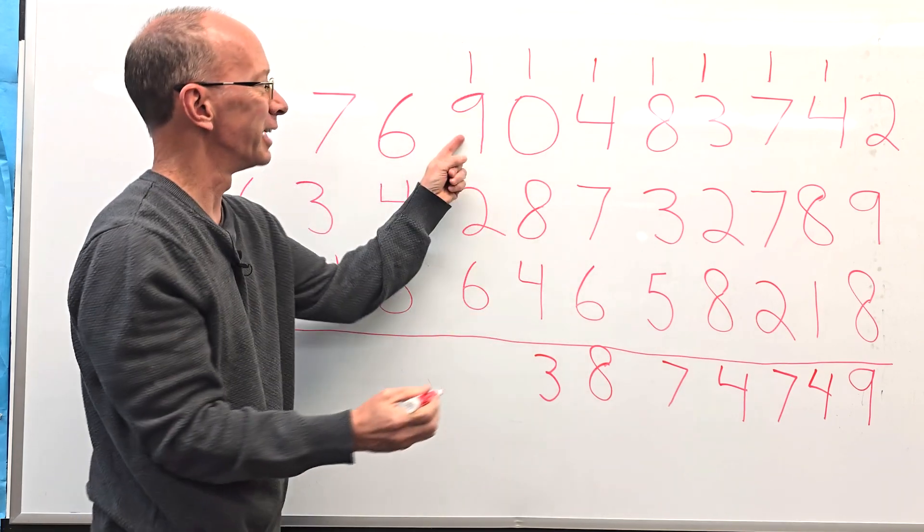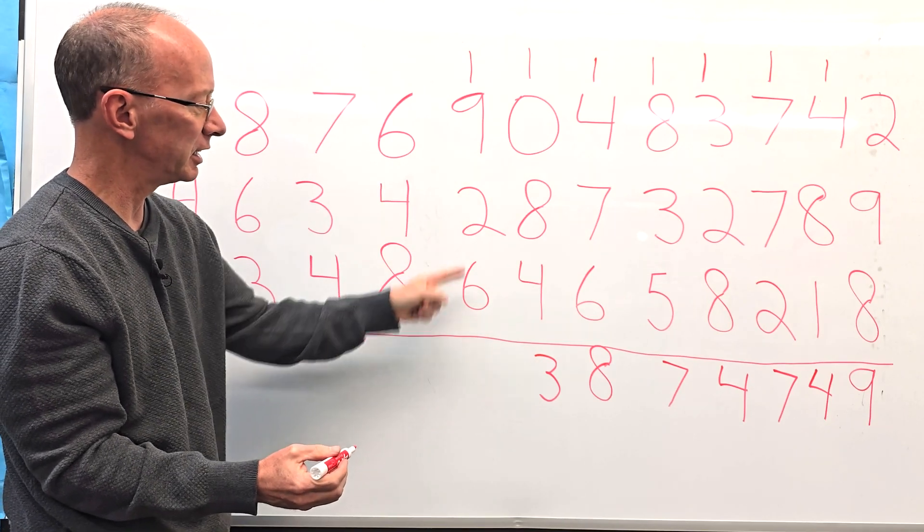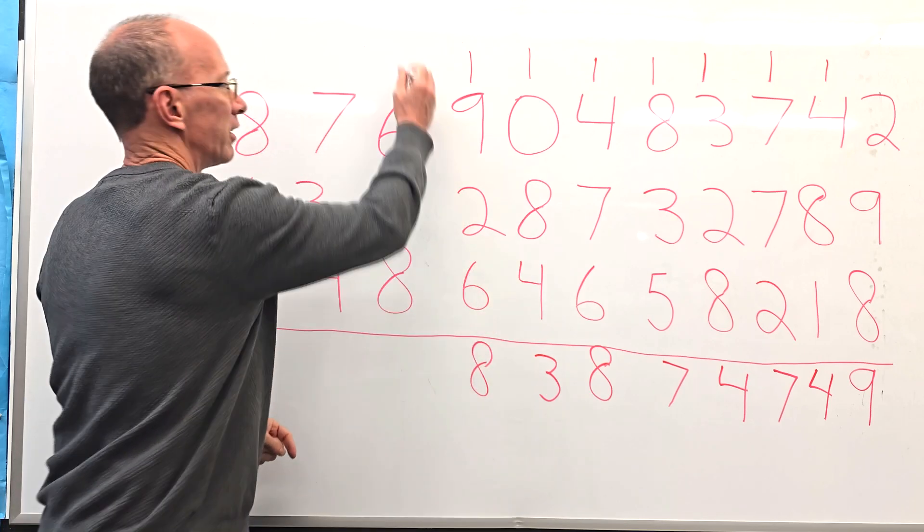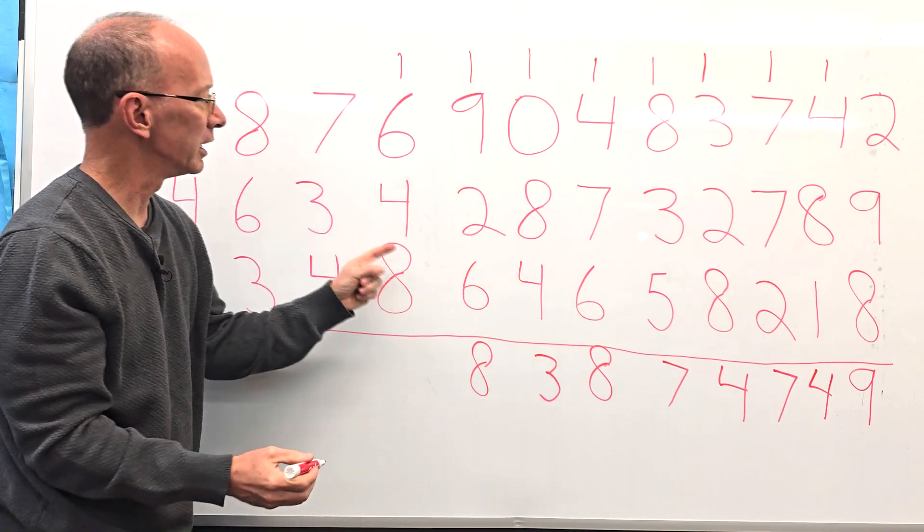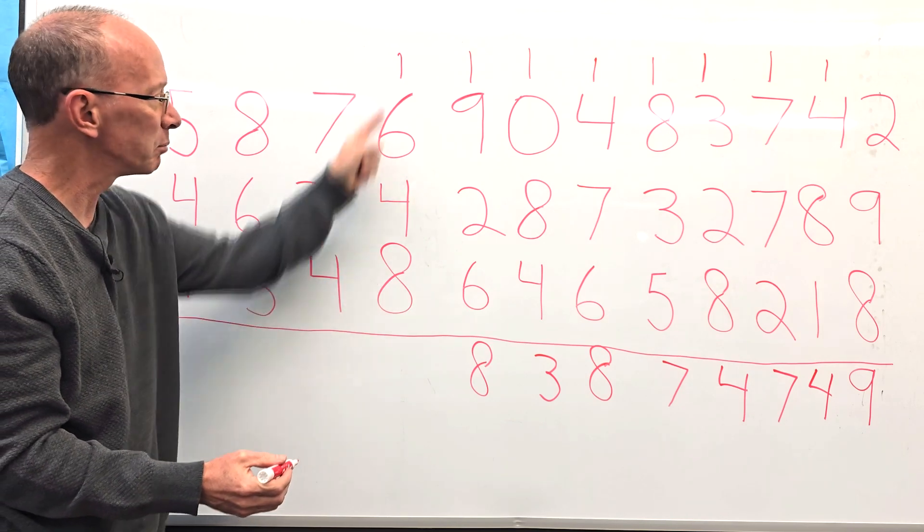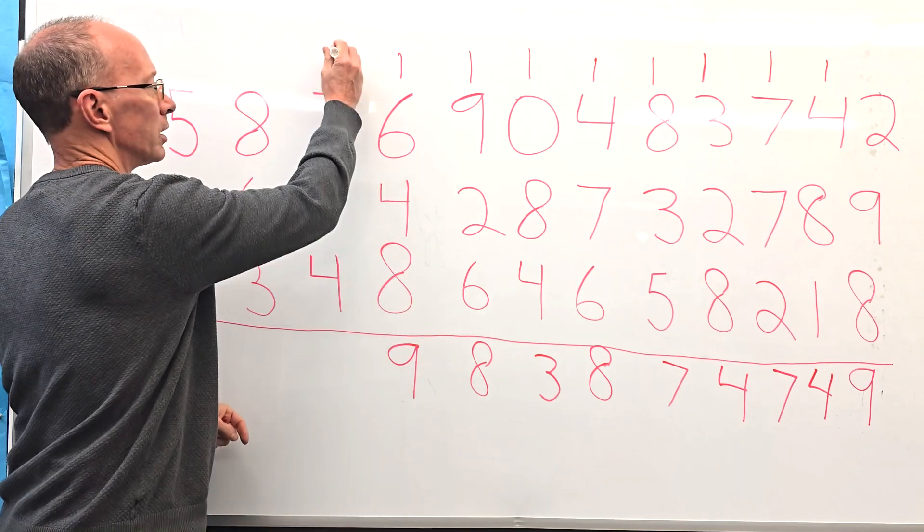And then 9 plus 1 is 10, 10 and 6 is 16, 17, 18. Carry that 1 up here. And then let me see here. Maybe 6 and 4 is 10, 10 and 8 is 18, plus the 1 is 19. Carry the 1 up here.